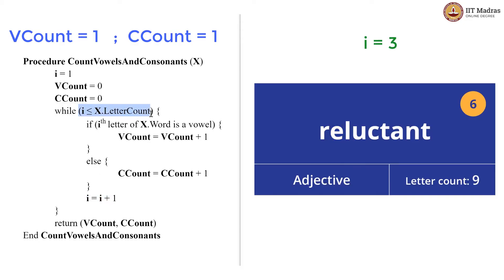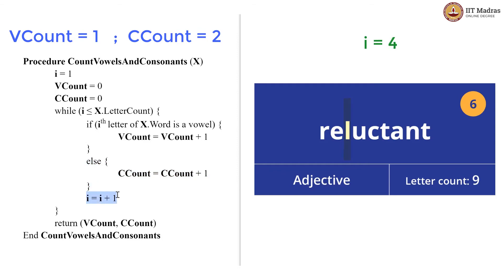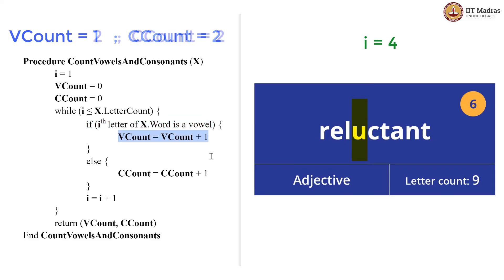3 is less than 9, so we check if the third letter of x dot word is a vowel. The third letter is a consonant, so we go into the else block and increment c_count to 2, then increment i to 4. 4 is less than 9, so we enter the while loop and check if the fourth letter of the word 'reluctant' is a vowel. It is — 'u' is a vowel — so we increment v_count and v_count becomes 2. We have seen 2 vowels and 2 consonants so far. We increment i to 5.